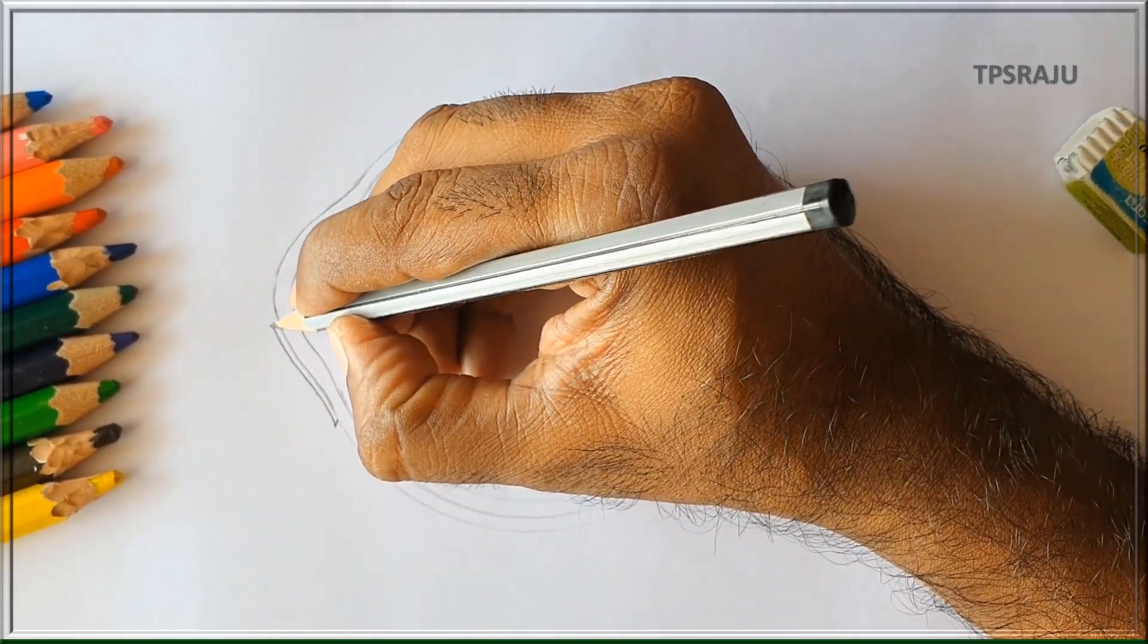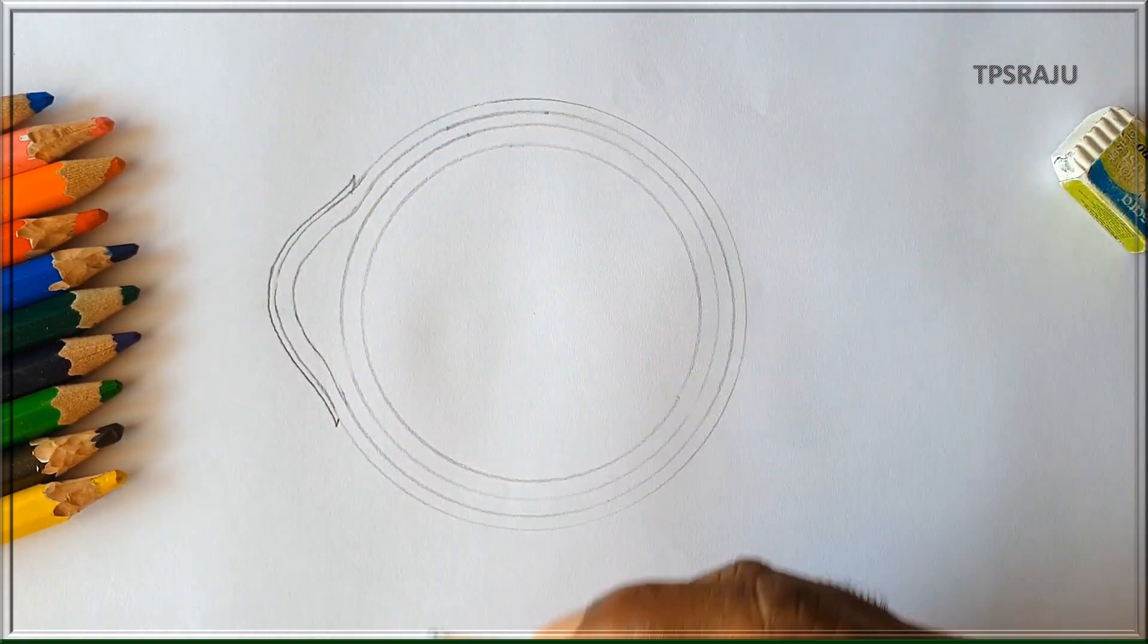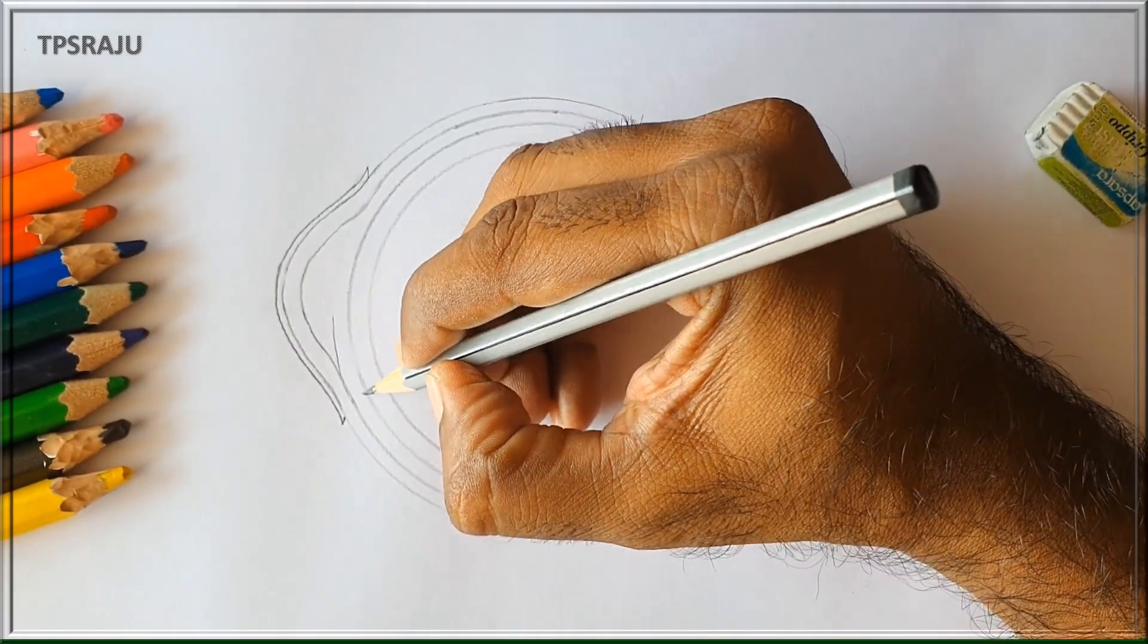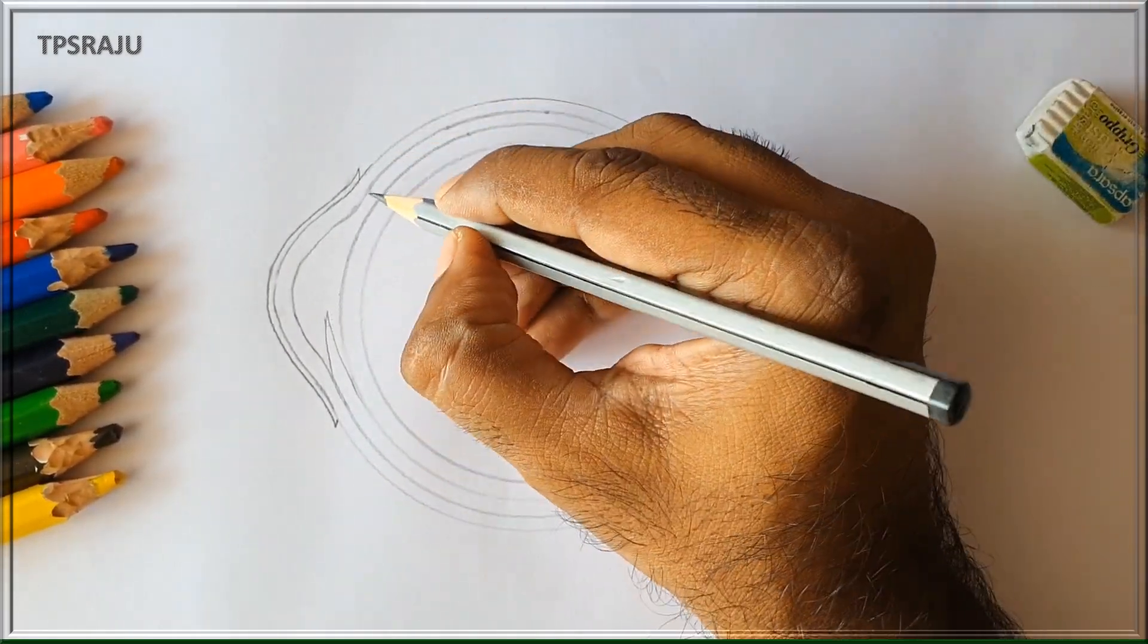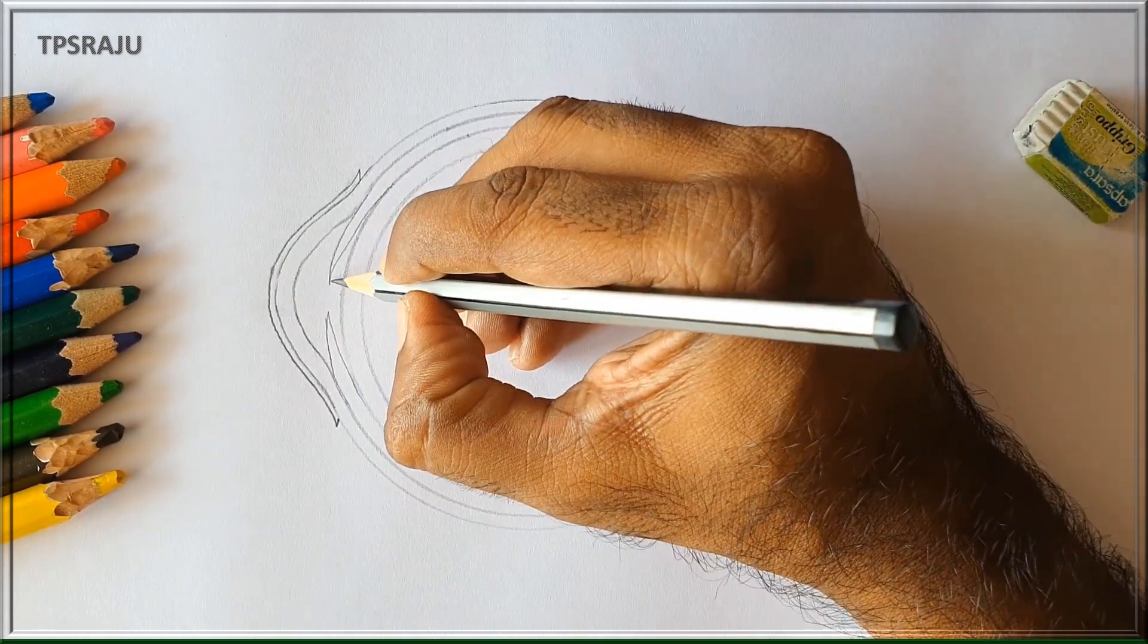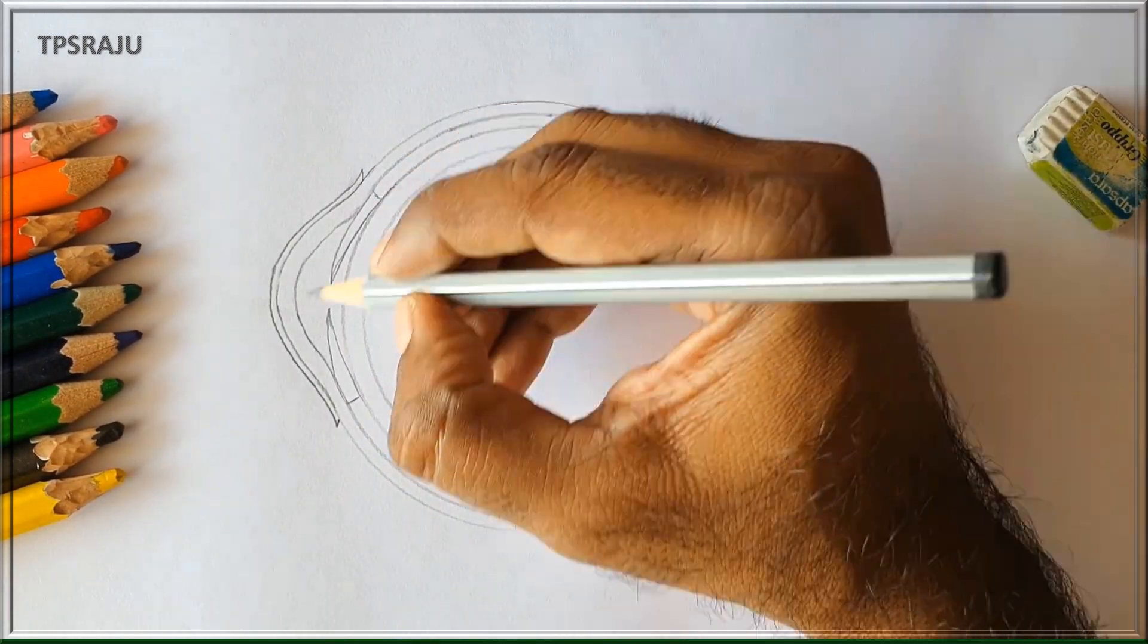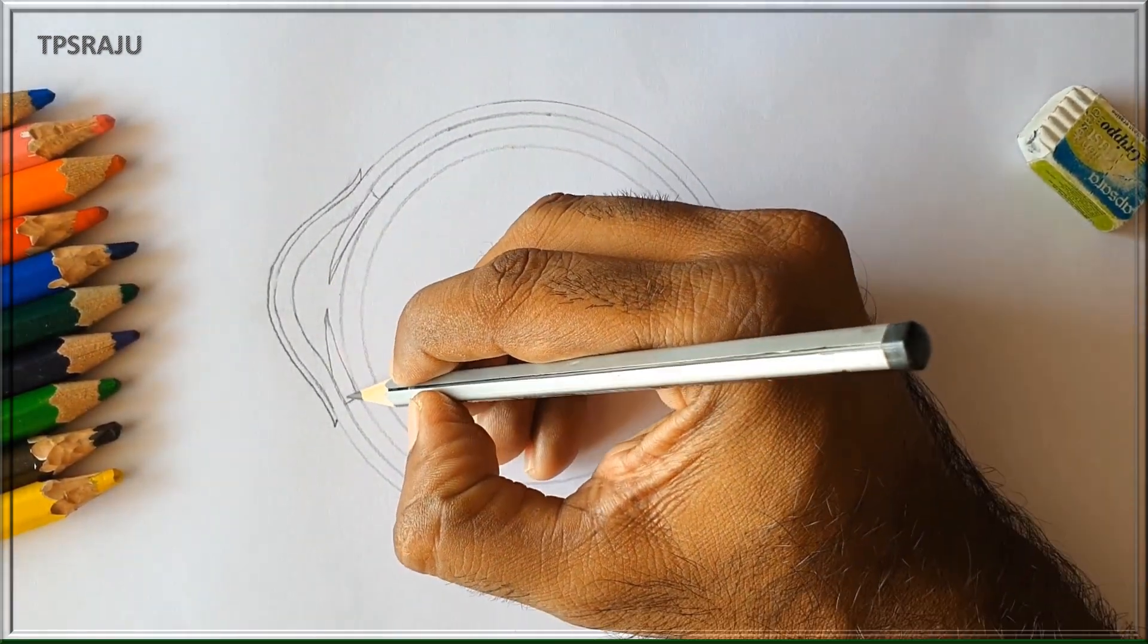Next is the raktapattalam, the choroid layer, which contains blood vessels. In the middle of this, we can see the pupil. The pupil is the round opening in the center, which is the taraka.